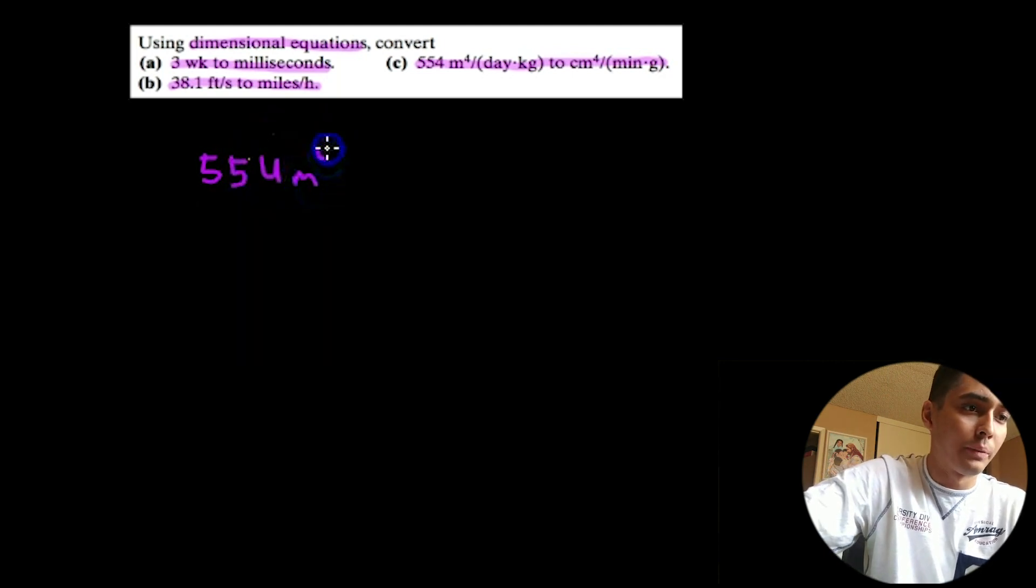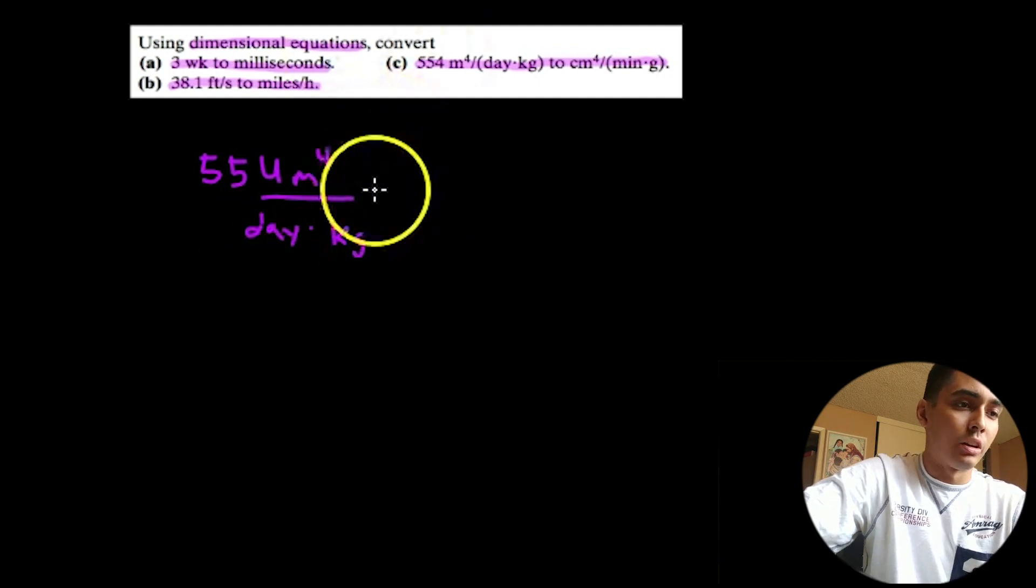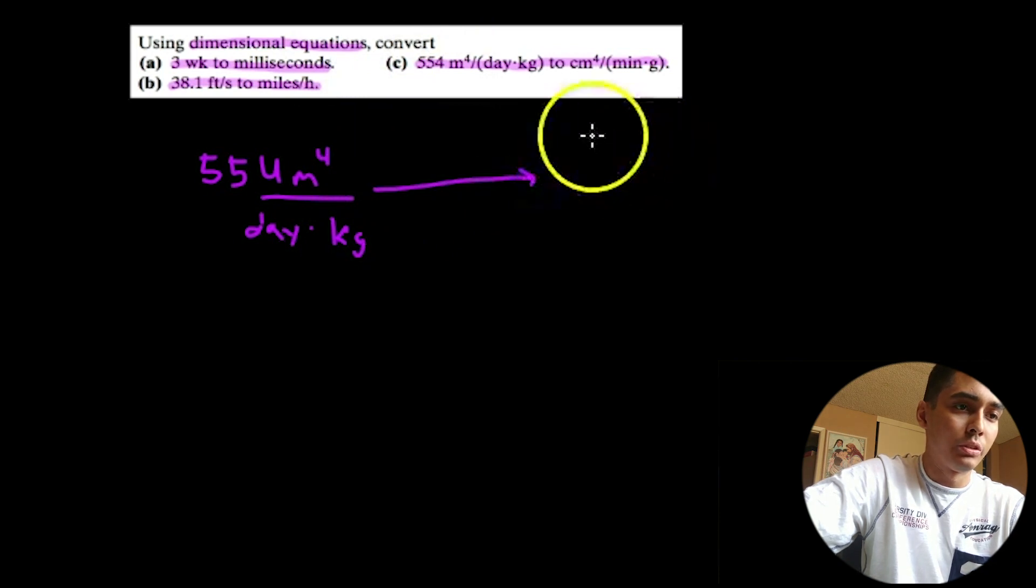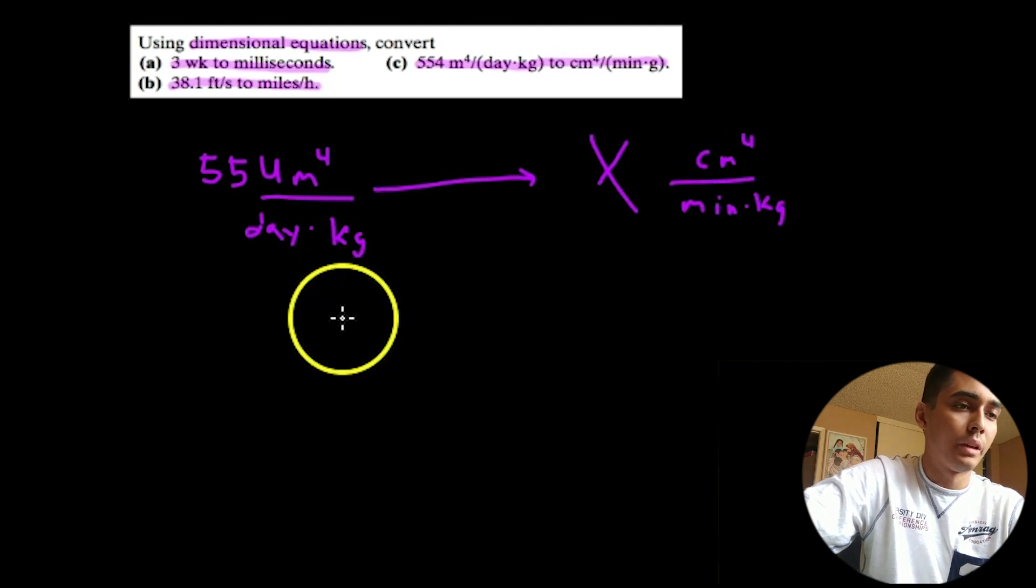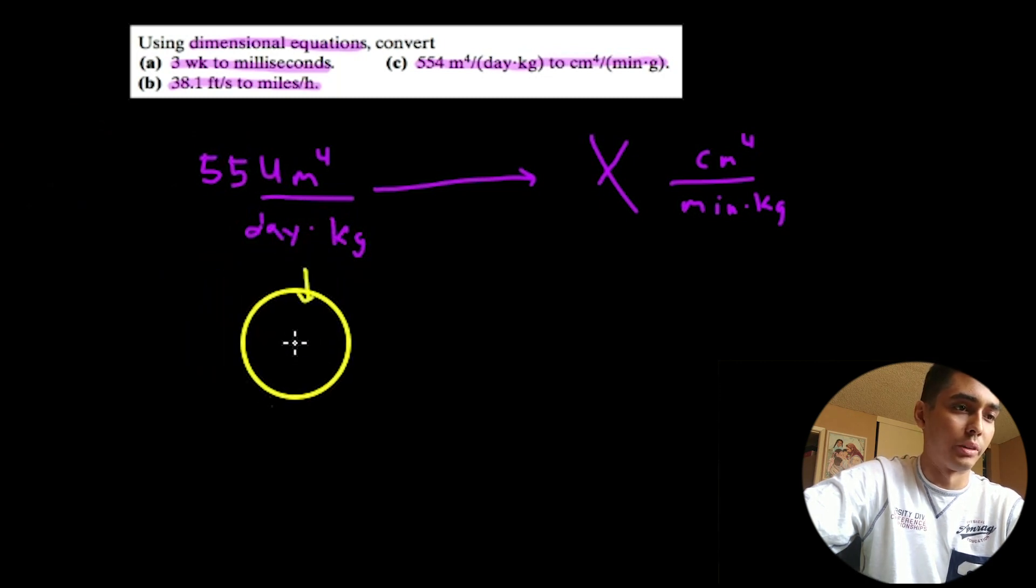And we want to convert this to some amount of centimeters per minutes times kilograms. So, again, dimensional analysis, especially if something so weird like this is very important. So meters to the 4th, that's going to be in length to the 4th, because meters is a length, divided by days, which is a time dimension, and kilograms, which is a mass dimension. And converting this, centimeters to the 4th, again, is length to the 4th, minutes is, of course, time, and kilograms is also mass.